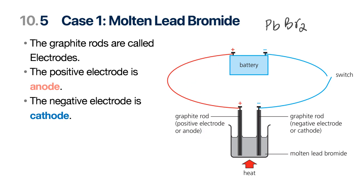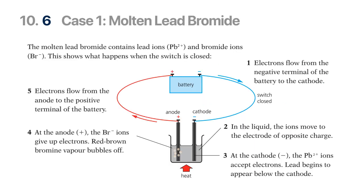Once electricity starts flowing, the cathode is rich in electrons where the anode is deprived in electrons and has a positive charge. So the solution has lead 2+ ions in it and bromine minus ions in it.